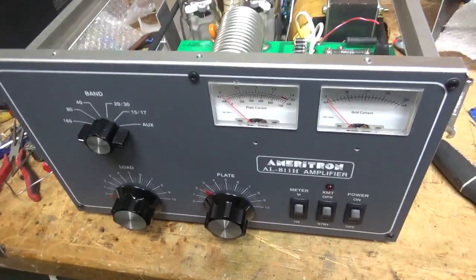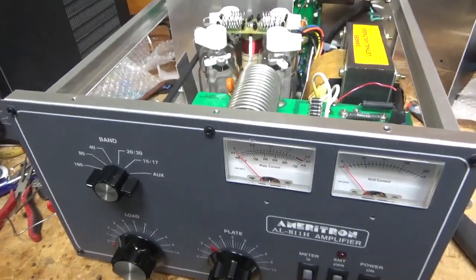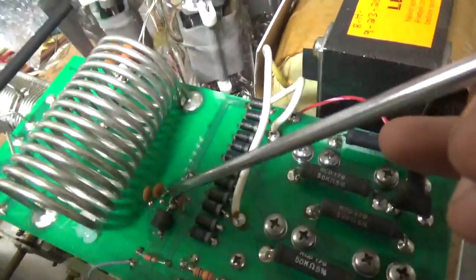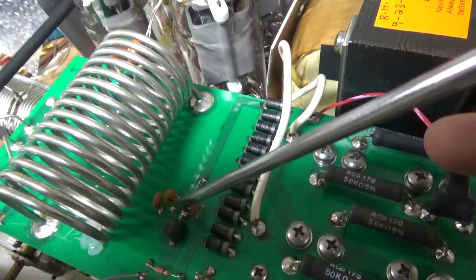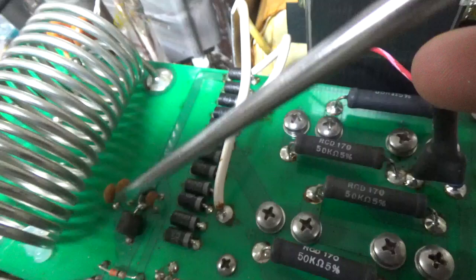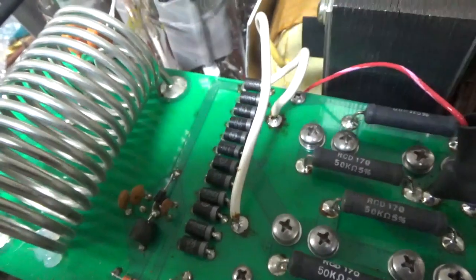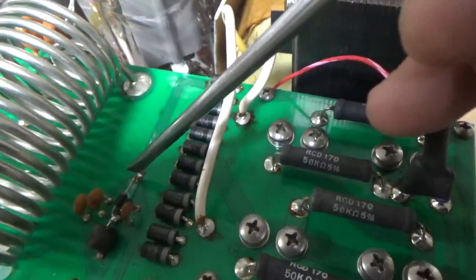Okay, so we're back with the completed Ameritron AL811H. I'll go over everything real quick. So someone changed the meter protection diode and they destroyed the trace on this side. So I went around the solid lead that's going through the ferrite piece right here, crimped it, clamped it with my needle nose pliers, soldered it, soldered at the other end.